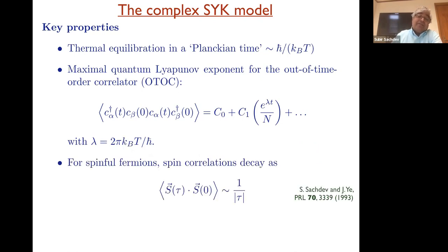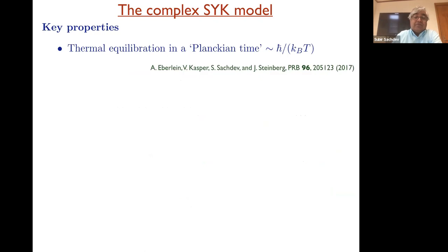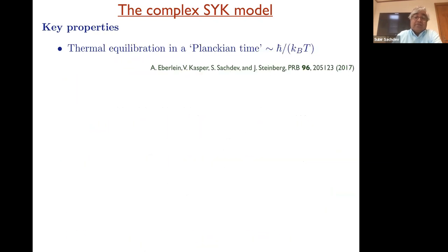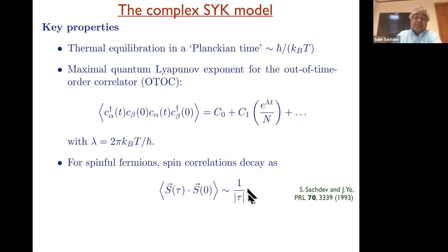And finally, if these fermions were spinful, then you can define a spin correlation function, a local spin correlation function. And one consequence of this one over square root of tau decay of the single electron Green's function is that this decay is one over tau.